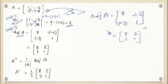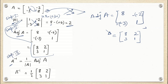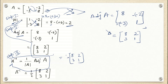Step number one was finding the determinant, step number two was finding the adjoint. To find the inverse of the matrix, we use the formula: A inverse equals adjoint of A divided by the determinant of A. The adjoint matrix is [8, 2; 3, 1] and we divide by the determinant, which is 2. This is why the determinant must not be zero — if it were zero, the inverse would not exist.